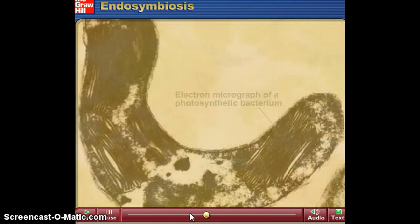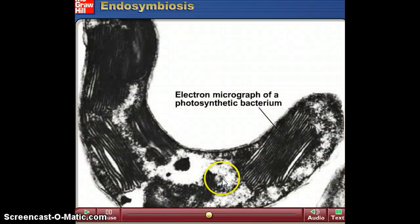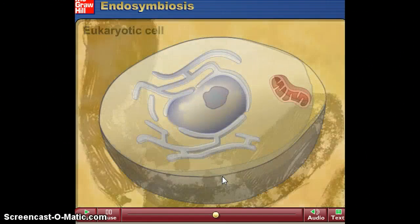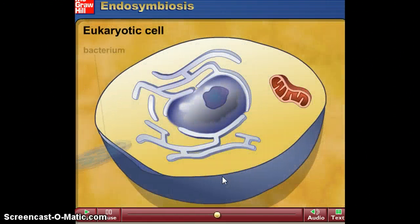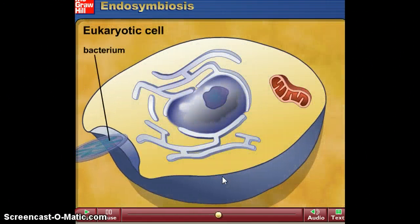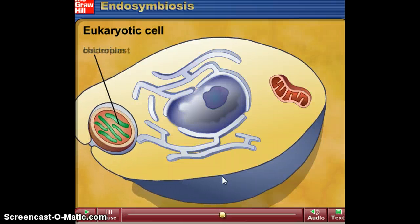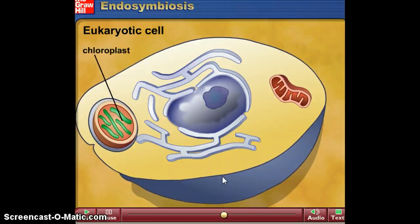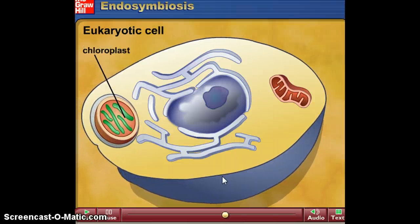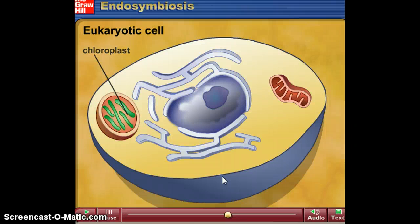Over time, we had some prokaryotes that had chloroplasts in them — photosynthetic bacteria. These were also absorbed by eukaryotic cells millions of years ago to become organelles that we call chloroplasts. So this has been a quick review of endosymbiosis.